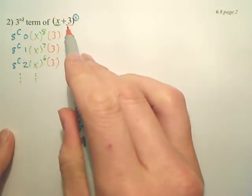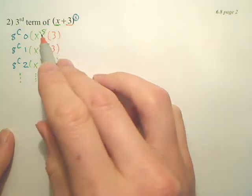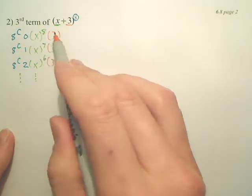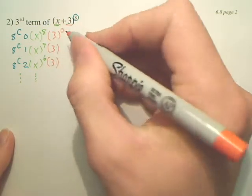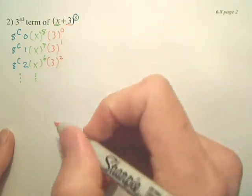And what term do we start with? I mean, what power do we start with? We start at 8 here, so we start with the opposite, which is 0. And then we work our way down. 1, 2, and so forth.